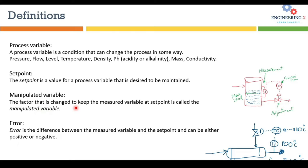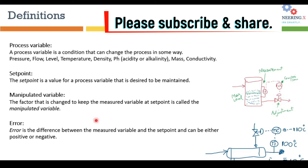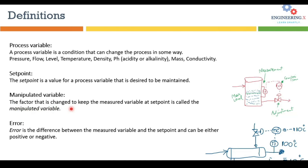The manipulated variable is the factor that is changed to keep the measured variable at the setpoint. Looking at the water tank example, the comparison output of the controller produces a manipulated variable, which is the actuator position of the valve. The factor that is changed to keep the level — the measured variable — at the setpoint is the position of the valve, so that is the manipulated variable.